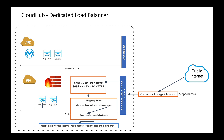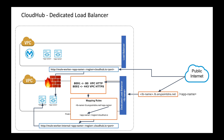Similar to the shared load balancer, you also have the concept of bypassing the dedicated load balancer. Generally, you would turn this off — you would configure the firewall rules to allow traffic to ports 8091 and 8092 and lock those down to that private worker cloud within your AnyPoint platform environment.